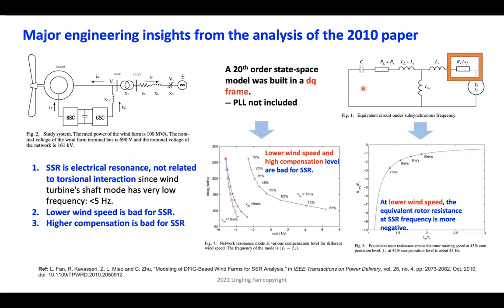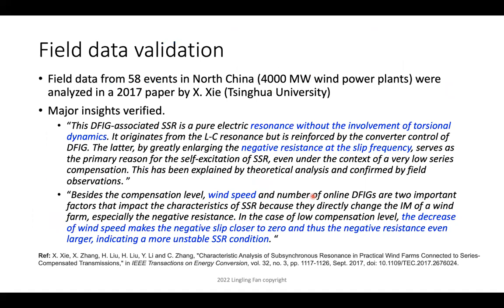The question is: why is low wind speed bad? Low wind speed means low rotor speed. Using the steady-state circuit of the induction machine — with the slip resistor r/s — if we plug in the resonance frequency instead of the synchronous frequency, the slip becomes negative, making the equivalent resistor negative. At lower wind speed, this negative resistance becomes more negative, making the entire system more unstable. That is the circuit-level explanation for why lower wind speed causes instability.